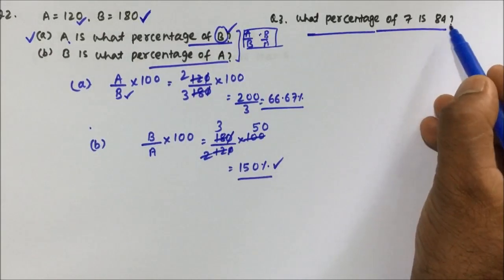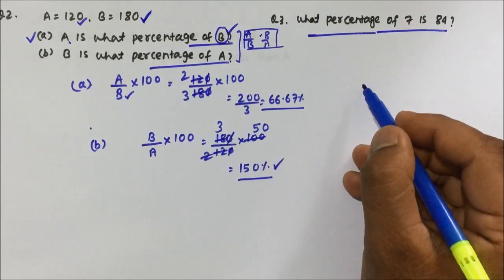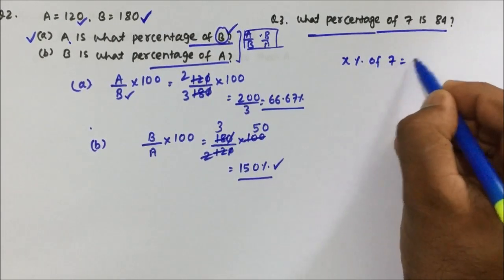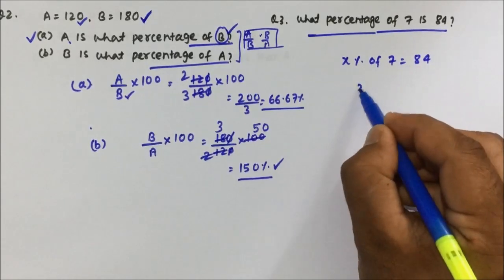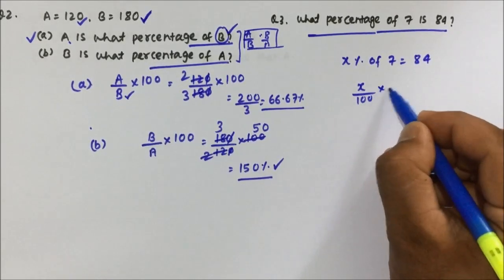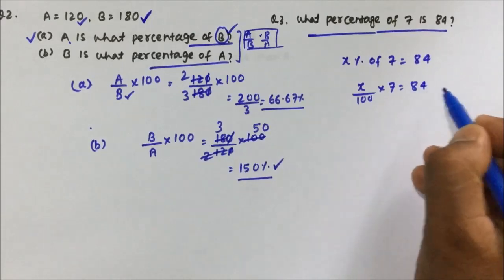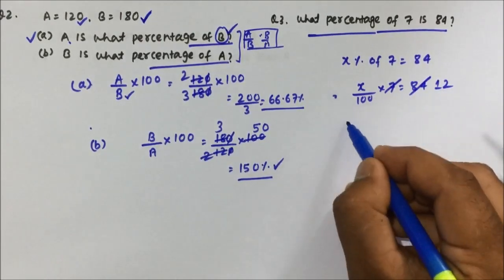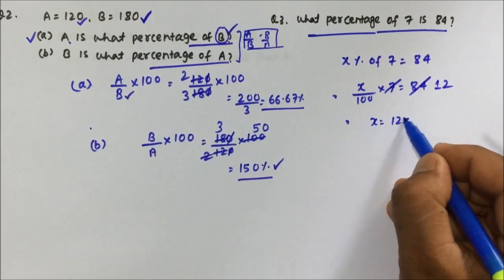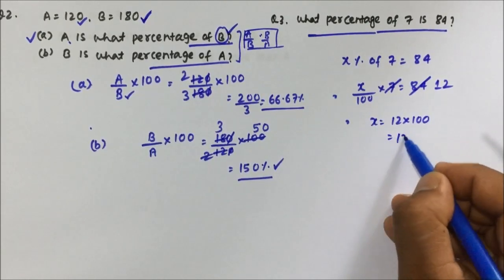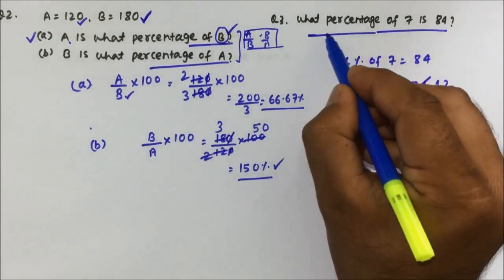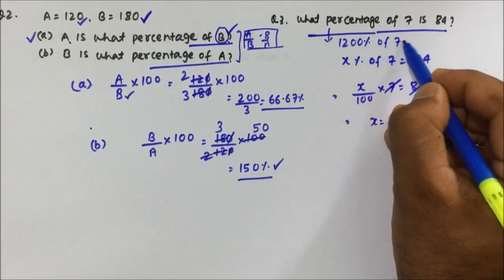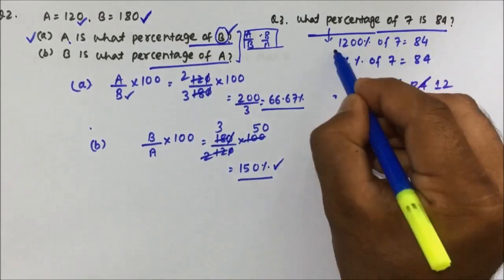Question 3: What percentage of 7 is 84? Assume x percent of 7 equals 84. So (x / 100) × 7 = 84. Solving: x = (84 / 7) × 100 = 12 × 100 = 1200. So 1200 percent of 7 equals 84, and the answer is 1200.